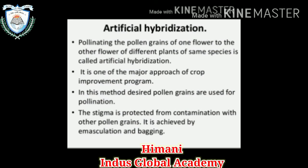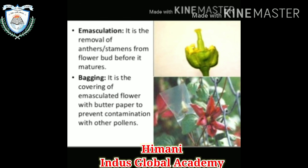Now, artificial hybridization — pollinating the pollen grains of one flower onto another flower of a different plant but the same species is called artificial hybridization. It is one of the major approaches of the crop improvement program. In this method, desired pollen grains are used for pollination, and the stigma is protected from contamination with other pollen grains. This is achieved by emasculation and bagging. Emasculation is the removal of anthers and stamens from the flower before it matures. Bagging is the covering of the emasculated flower with butter paper to prevent contamination with other pollen.